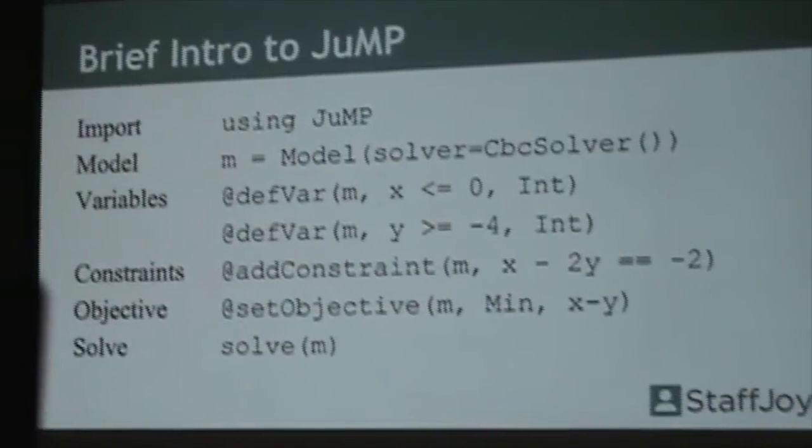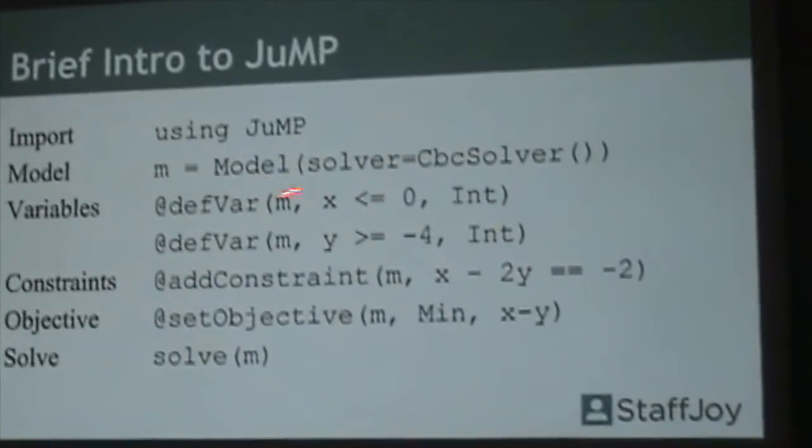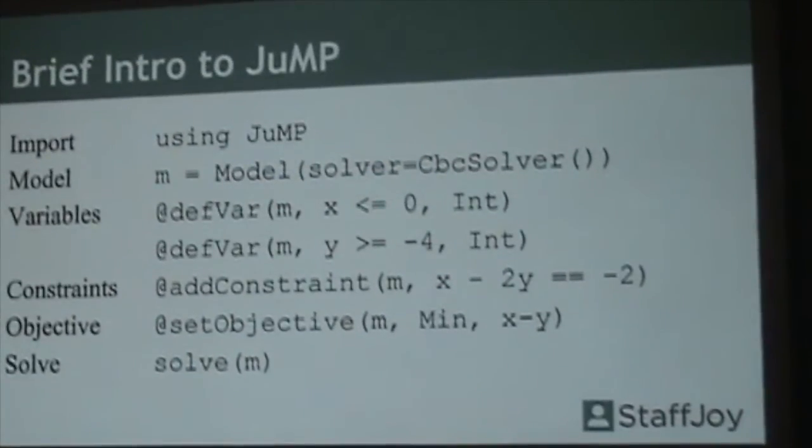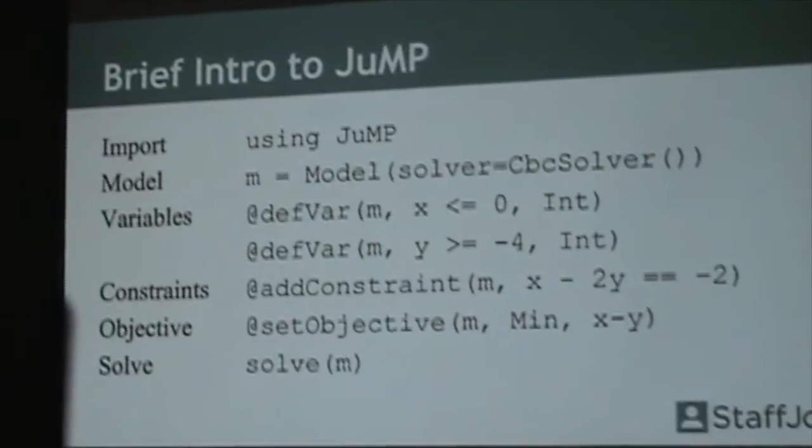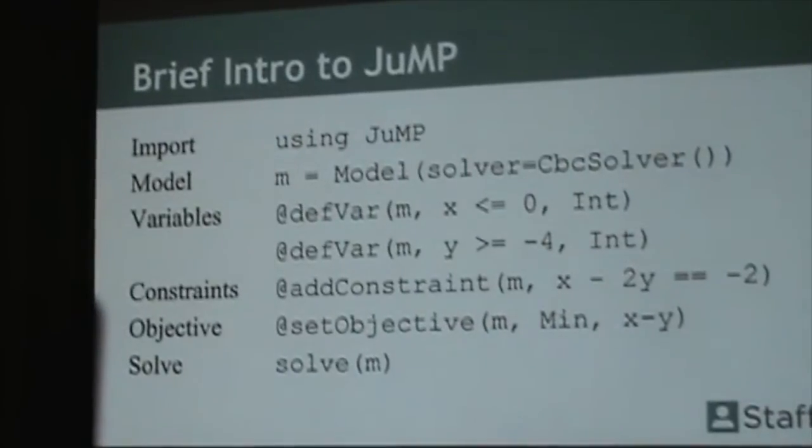Then you need to instantiate a model. You say m equals model. At this point, you have to specify which solver you want to use. If you go to the JUMP documentation, they'll explain how to call the different solvers that are available. It's pretty straightforward.